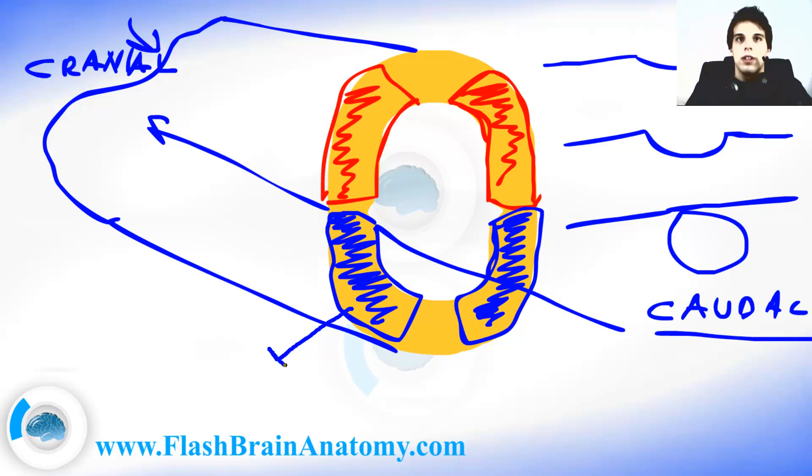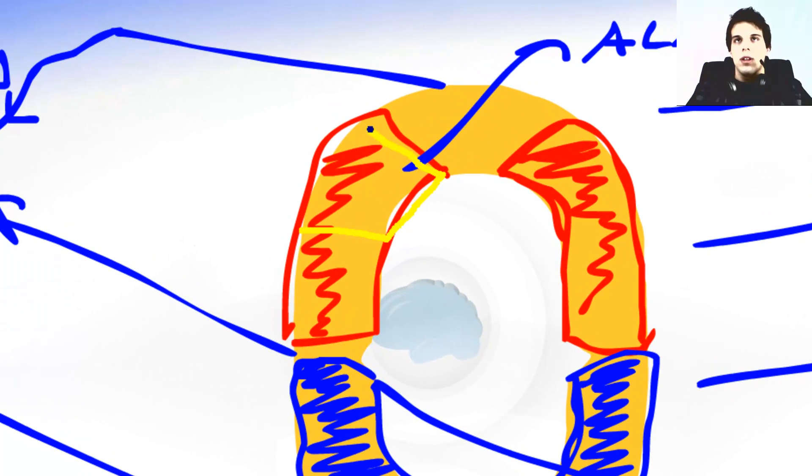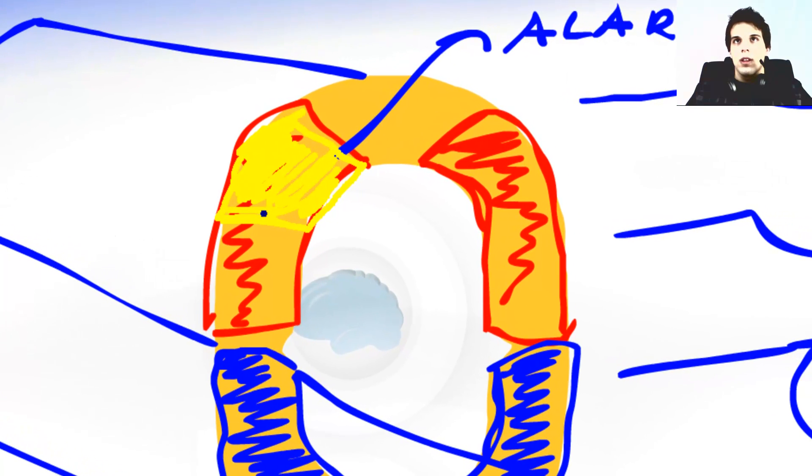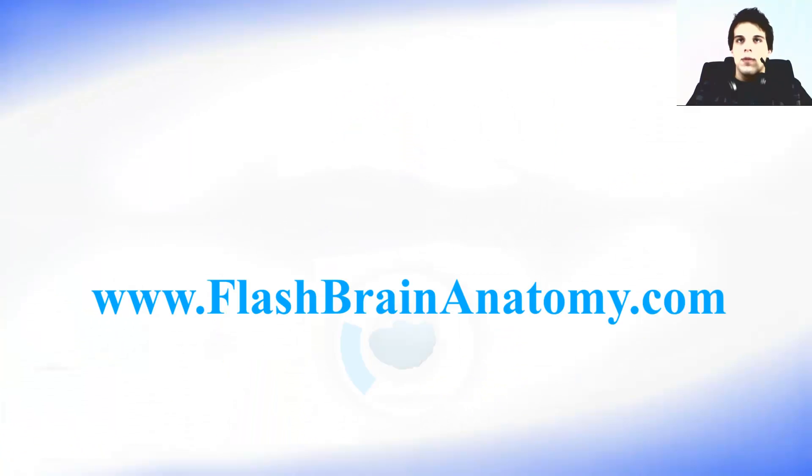Now let's get back to the neural tube. Let me write this. This was the basal plate on the ventral side, and this was the alar plate on the dorsal side. The dorsal part of the alar plate is important for environmental perception or somatic sense.